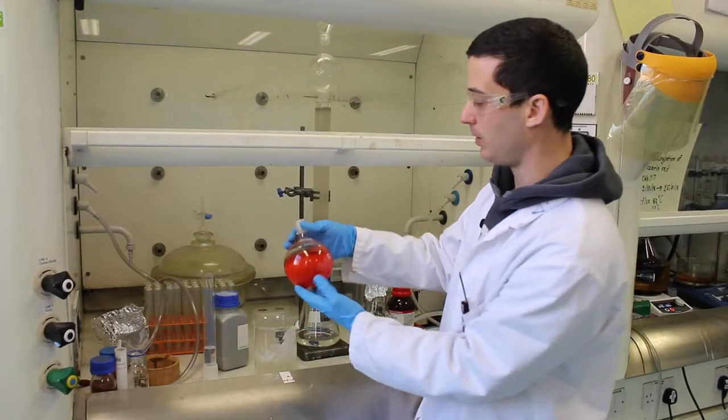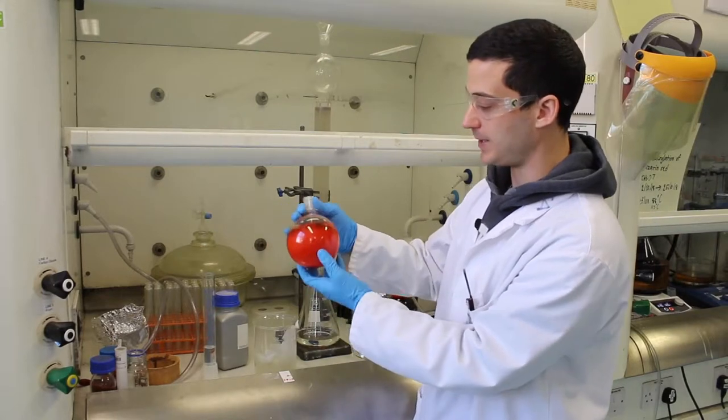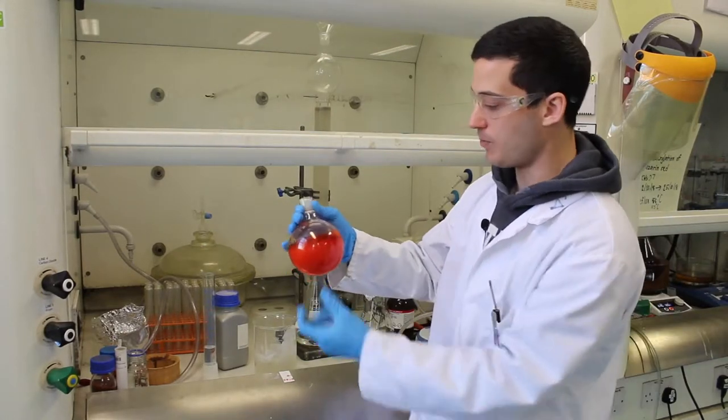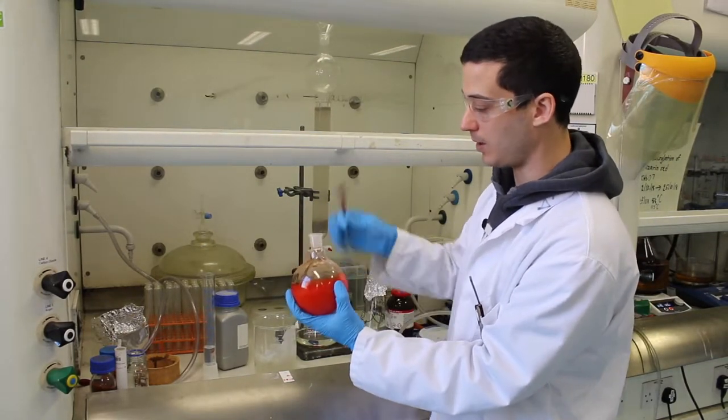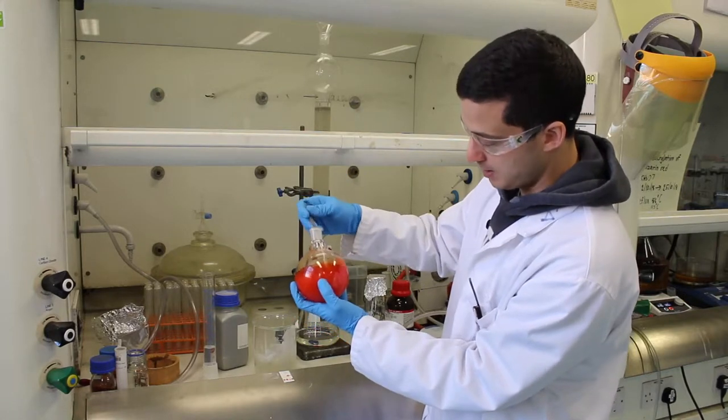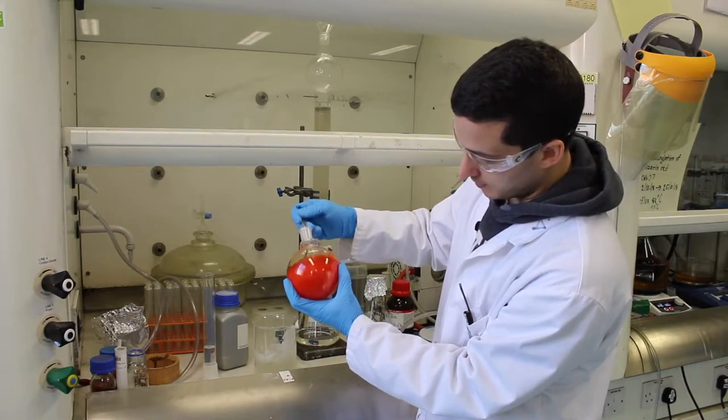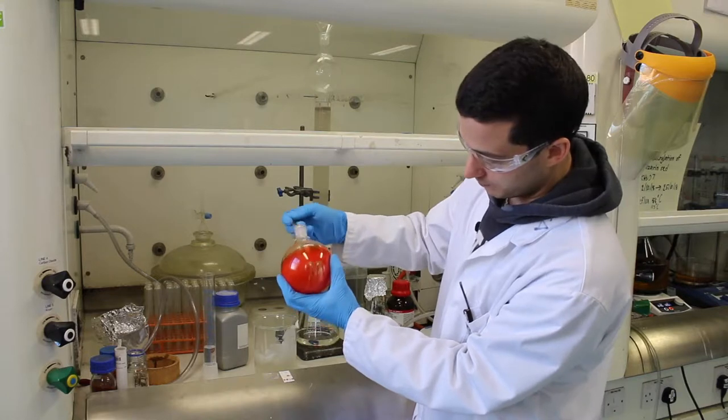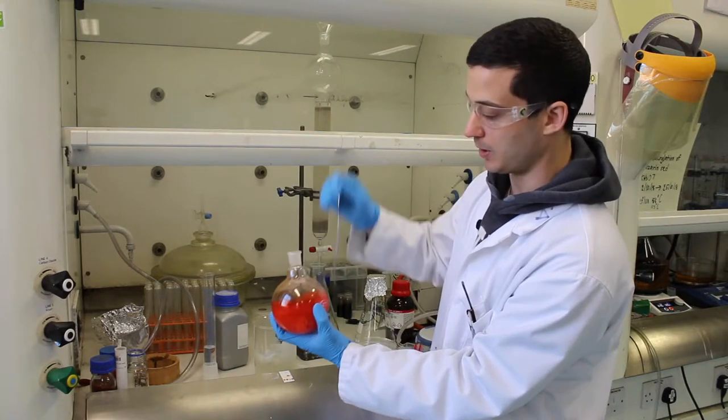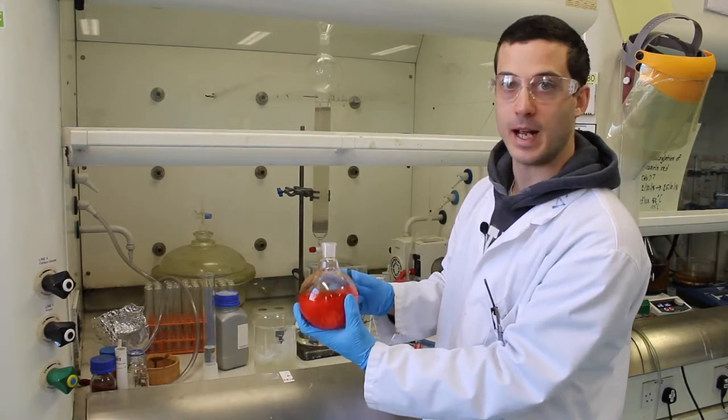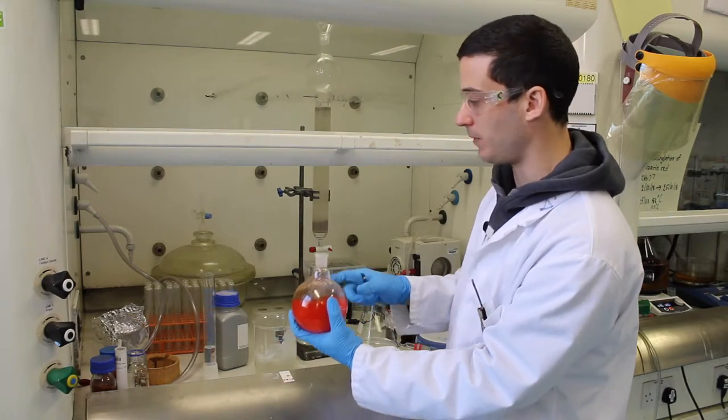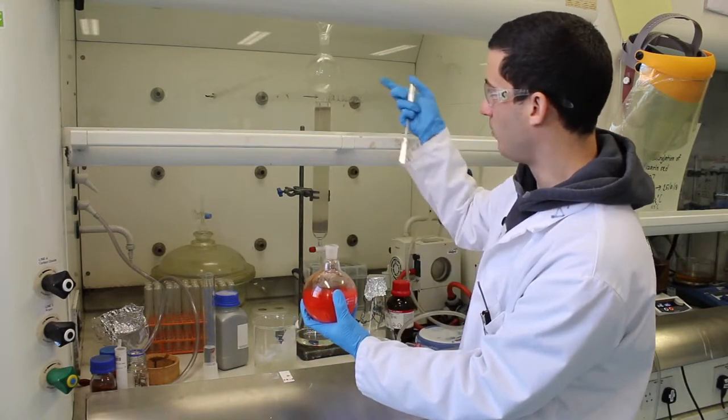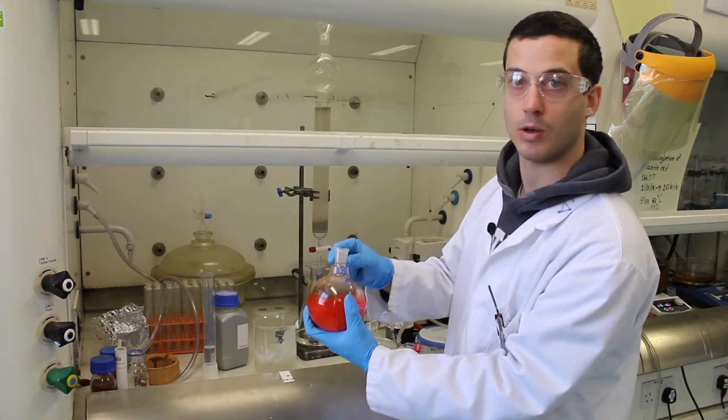Okay, right now all the methanol is now evaporated. We have this nice film of silica with the physisorbed crude compound. And as you can see we can scrape it out very nicely. And this is what we're going to do. We're going to scrape it out, collect it onto a little piece of aluminum foil, and then we're going to load it on top of our column.